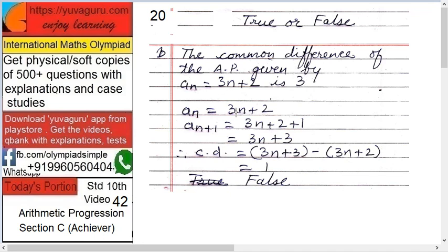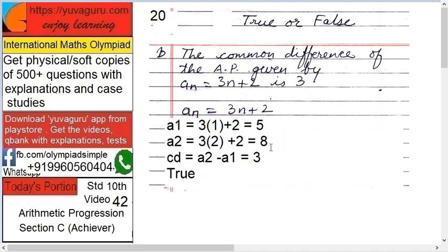AN equals 3N plus 2. So AN plus 1 will be equal to 3 into N plus 1, plus 2. If you solve this, 3 into N plus 1 becomes 3N plus 2 plus 1 — so it becomes 3N plus 3.